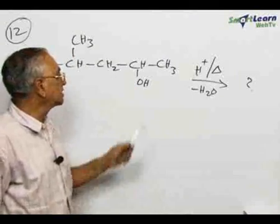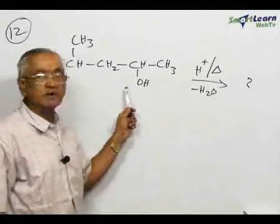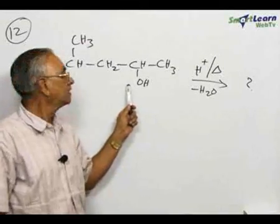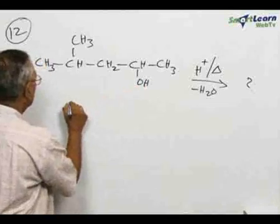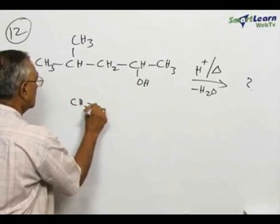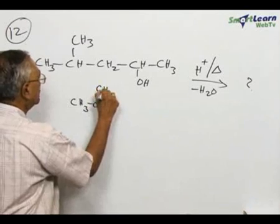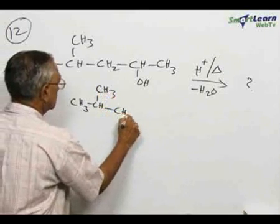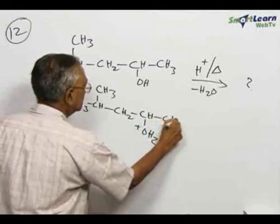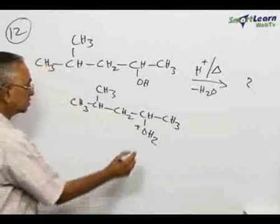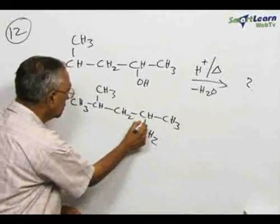The principle involved in this reaction is OH is a very poor leaving group. Whenever it is treated with an acid, OH gets protonated. Therefore, the first product of protonation will be CH2-CH-OH2+ CH3. This will be formed so that this becomes a very good leaving group.